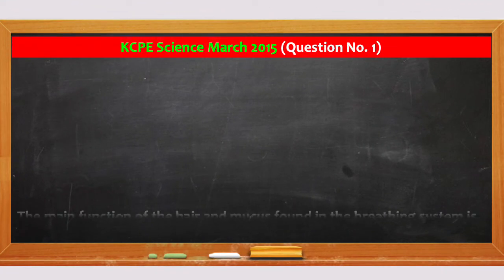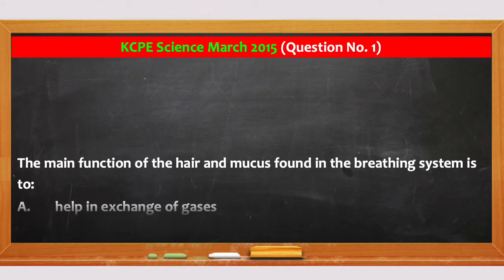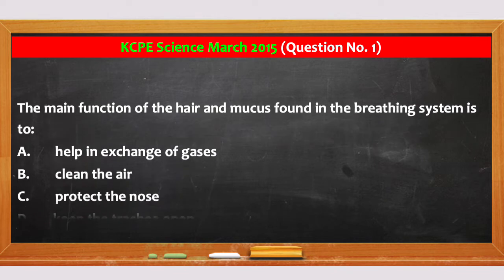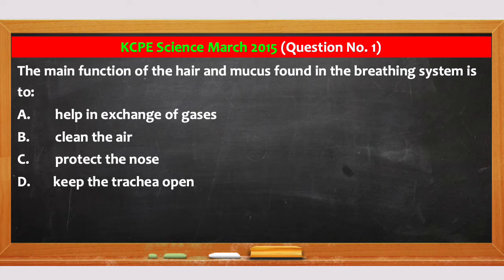What is the main function of the hair and mucus found in the breathing system? A. They help in the exchange of gases. B. They help to clean the air. C. They protect the nose. And D. They help to keep the trachea open.